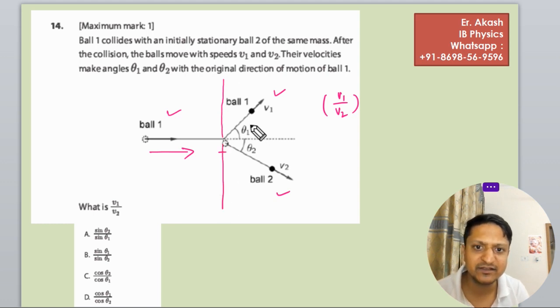So as this is theta 1, if this is v1, sine theta 1 and this is